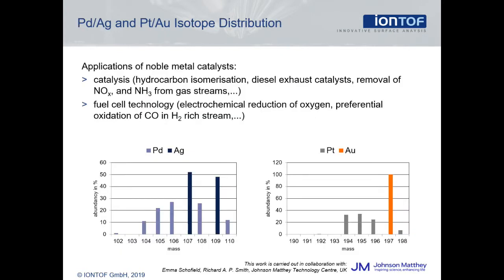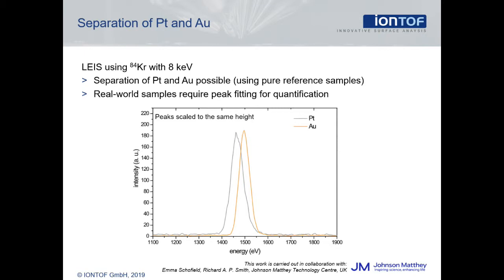One example that illustrates a classical approach to quantification is from noble metal catalysts, where elements like palladium and silver or platinum and gold are used in various catalysis applications. A challenge for LEIS is the fact that these elemental pairs have overlapping isotopes and are therefore difficult to resolve. A typical approach, besides the correlation plot method, is to measure samples with known surface concentration, for example the pure elements or their oxides. Here, using 8 kV krypton scattering and the so-called time-of-flight filter, the peaks for pure platinum and gold were measured. The peaks show a significantly different position, although due to the overlapping isotope pattern there is also a strong overlap of the peaks. This is only possible using the QTAC analyzer, which allows the operator to use heavy primary ions to improve mass resolution for heavy elements.